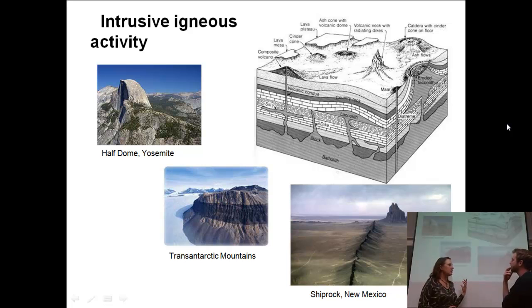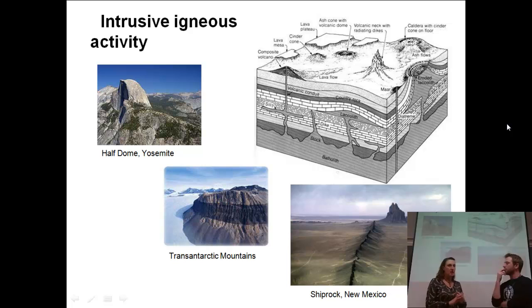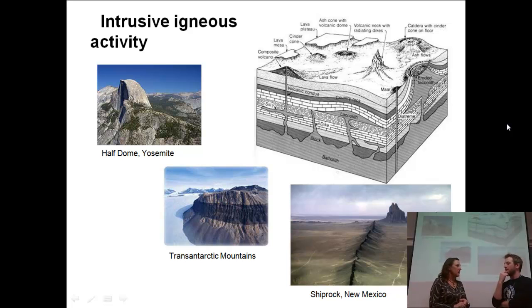What we're seeing at Half Dome that tells us how it formed is granite, which of course is phaneritic — nice big crystals — confirming it cooled slowly underground as part of a batholith.